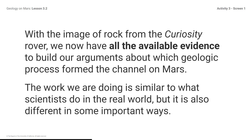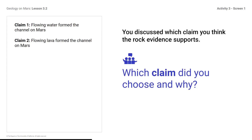In our investigation, we were able to collect evidence and build our understanding about how the channel on Mars was formed more quickly. Claim 1: Flowing water formed the channel on Mars. Claim 2: Flowing lava formed the channel on Mars. You discussed which claim you think the rock evidence supports. Which claim did you choose, and why?